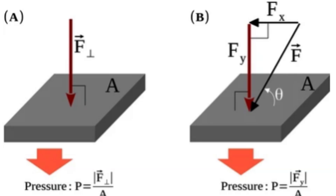How is confining pressure formed? Confining pressure is formed by the weight of overlying rocks and sediments in the Earth's crust. It's a result of the immense gravitational force acting on the materials below the Earth's surface, causing them to experience pressure from all directions. Here's a more detailed explanation of how confining pressure is formed.